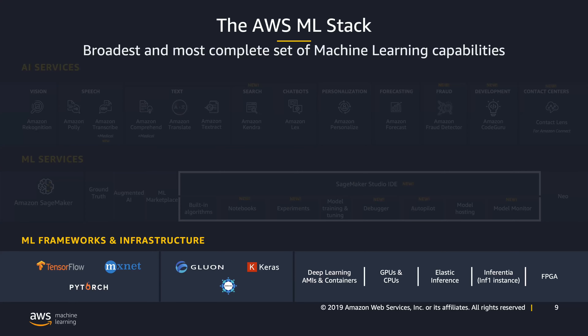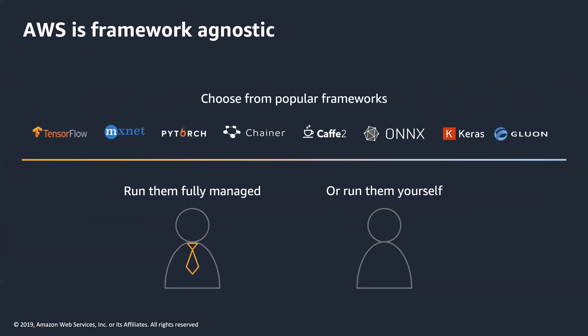That last layer on the bottom is the machine learning frameworks and infrastructure, specifically for advanced machine learning practitioners. You can see some common frameworks on the bottom left of this slide — we have teams dedicated to these to make sure they run optimized on AWS. Advanced practitioners can also take advantage of our infrastructure. AWS is framework agnostic: whatever framework you want to use, we want to make sure it runs perfectly on our cloud — fully managed using SageMaker, or on EC2 instances if you so choose.